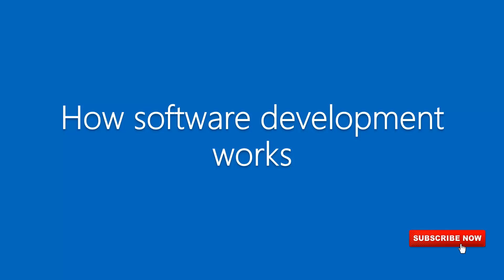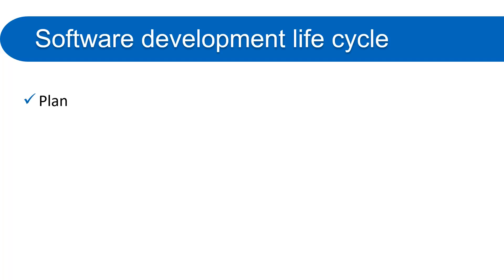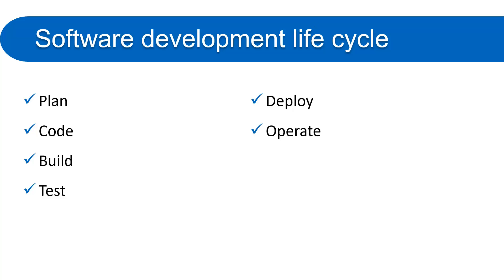Before DevOps, let's look at how software development works. I'll discuss the basic lifecycle of software development. First you make a plan, then you write the code, then you build your code to give it to the testing team. The testing team tests the product, after which it is deployed on the server. Once deployed, certain operations need to be performed, and someone from the team has to monitor what is happening on the server — whether it needs to scale up, scale down, or increase server capacity.